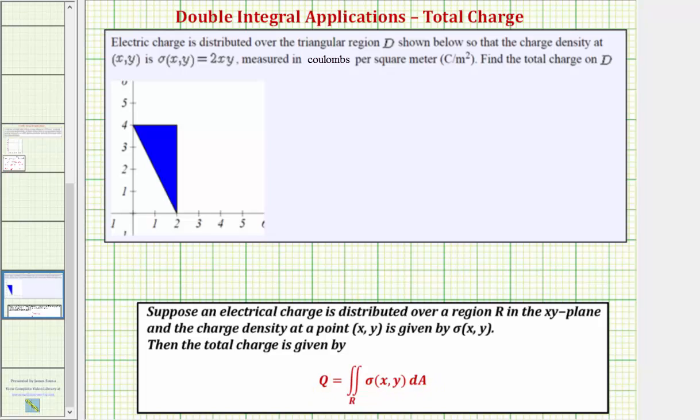So in our case, the total charge Q is equal to the double integral over the region D, this triangular region, and sigma of x comma y is equal to two xy, then we have differential A.